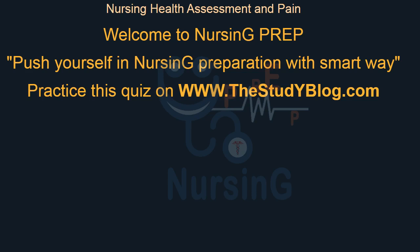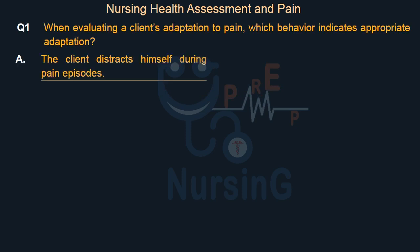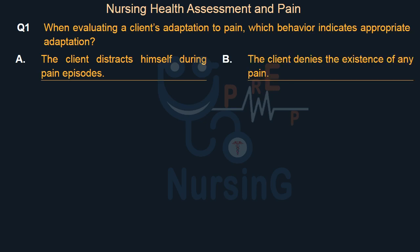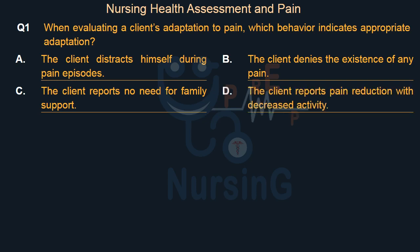Nursing Health Assessment and Pain. When evaluating a client's adaptation to pain, which behavior indicates appropriate adaptation? Option A: The client distracts himself during pain episodes. Option B: The client denies the existence of any pain. Option C: The client reports no need for family support. Option D: The client reports pain reduction with decreased activity.